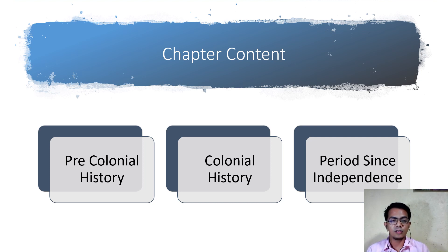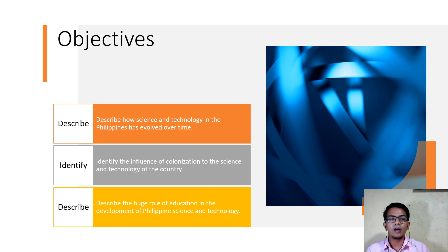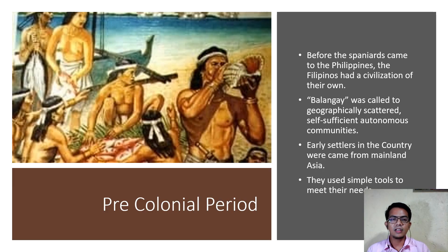The first lesson is the pre-colonial history, colonial history, and the period since independence of the Philippines. After this lesson, students are expected to describe how science and technology in the Philippines changed over time, identify the influence of colonization on science and technology, and describe the huge role of education in the development of science and technology.